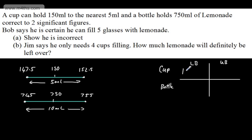So let's go ahead and put these in. Lower bound for the cup is 147.5. Upper bound is 152.5. For the bottle, lower bound is 745, upper bound is 755.